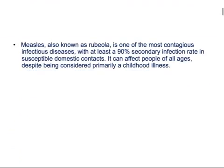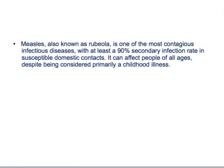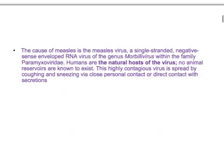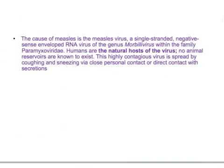Measles, also known as rubeola, is one of the most contagious infectious diseases, with at least 90% secondary infection rate in susceptible domestic contacts. Cases of measles are very common in developing countries rather than developed countries. It can affect people of all ages despite being considered primarily a childhood illness.